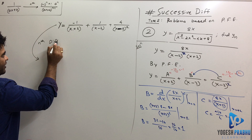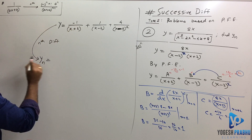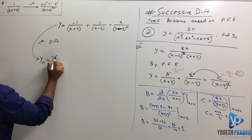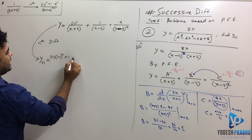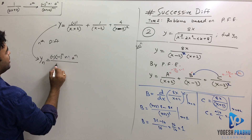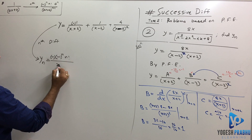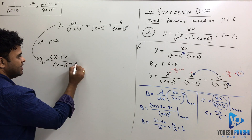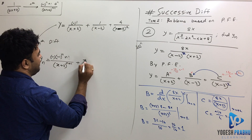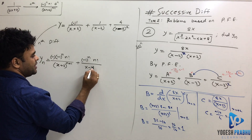To find the nth differentiation, we use the standard formula for 1 over (x plus b). Applying it to the first two terms: y_n equals minus 1 times (minus 1) raised to n times n factorial over (x plus 2) raised to (n plus 1), plus (minus 1) raised to n times n factorial over (x minus 2) raised to (n plus 1).